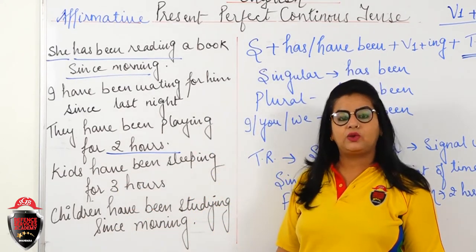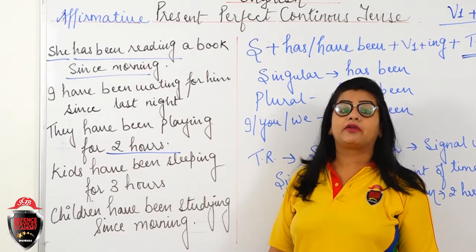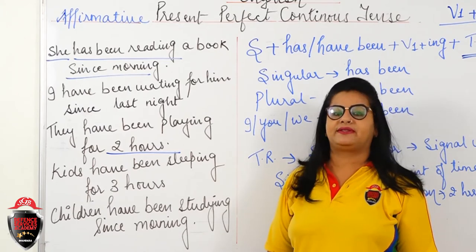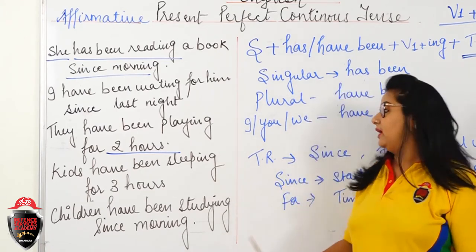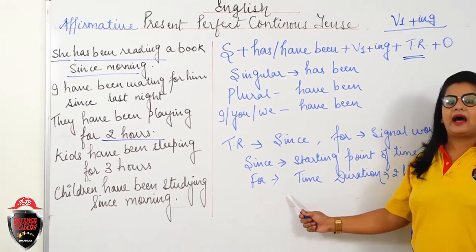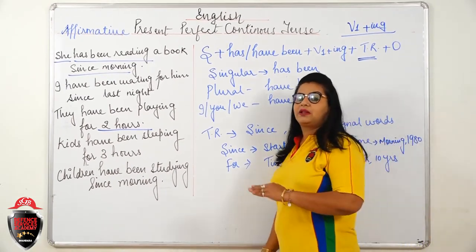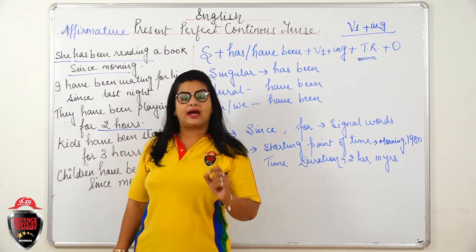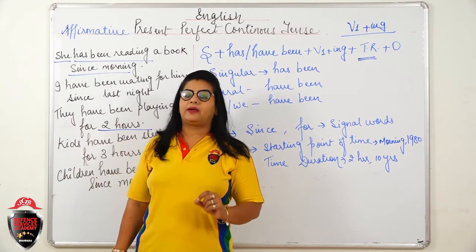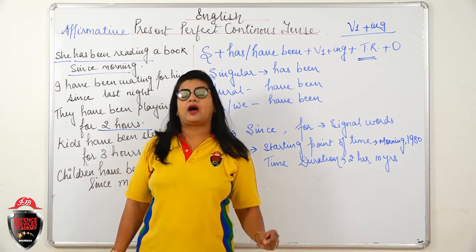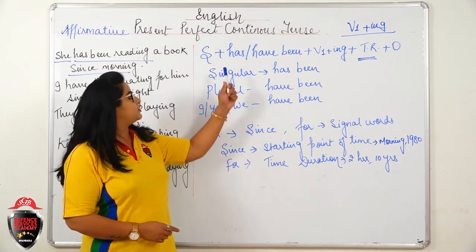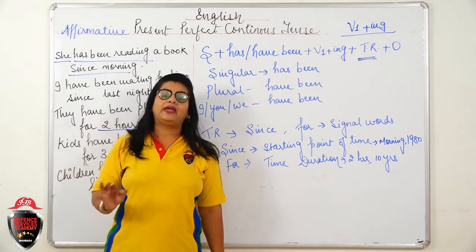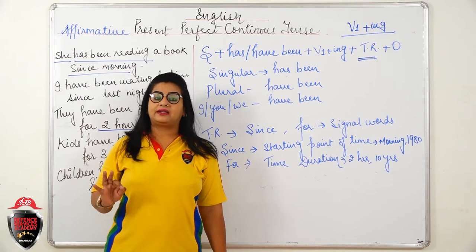The rules to spot errors in sentences: errors come on the usage of since and for. Since means starting point of action. For means time duration. Remember this. Present Perfect Continuous Tense cannot be used without since or for. If the tense is used and since or for is not there, that is also an error. These are the things to remember.